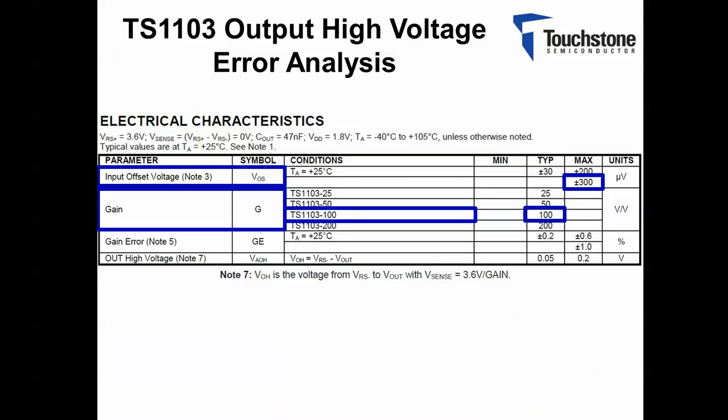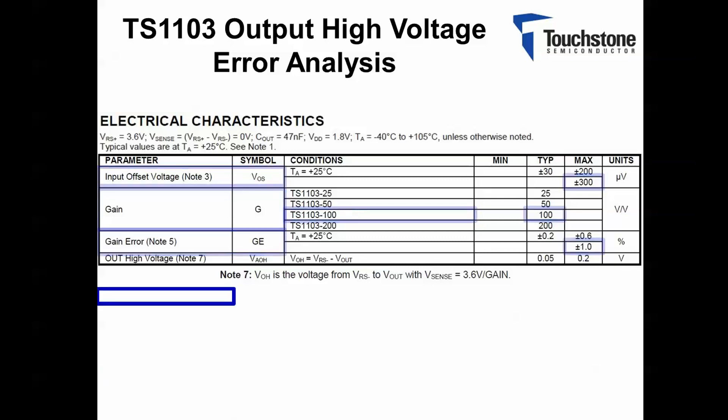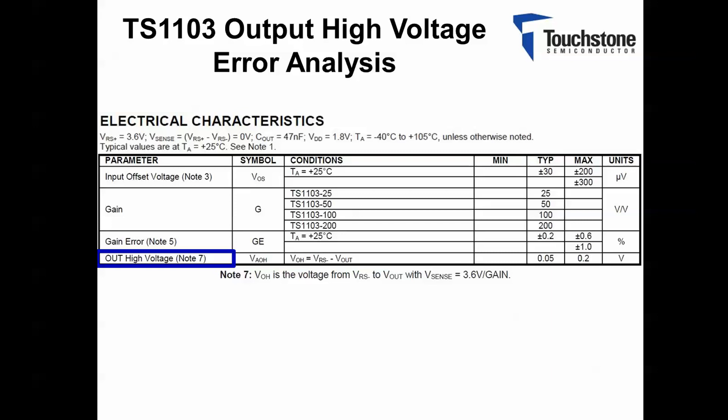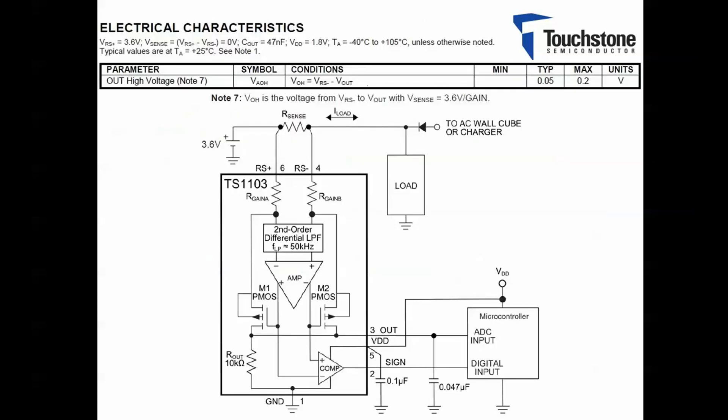For this demonstration, I have selected the TS-1103-100, which has a gain of 100. The maximum gain error over the entire temperature range will be 1%. Lastly, the output high voltage. Before I begin the calculation, I would like to show how this parameter can be measured on a circuit.